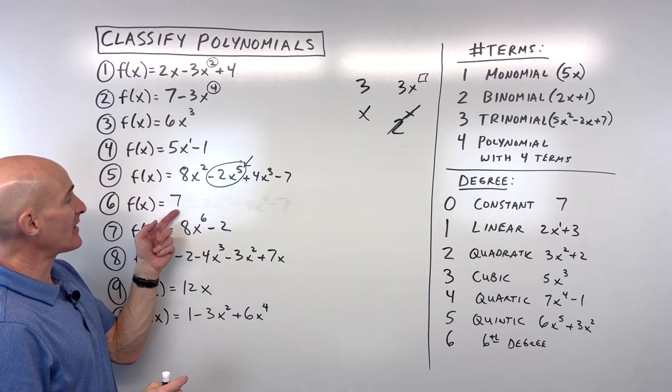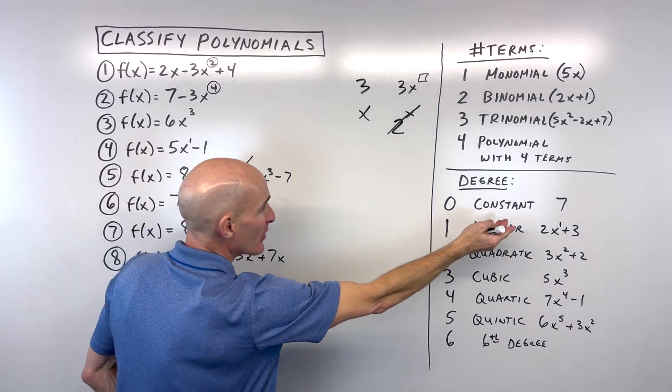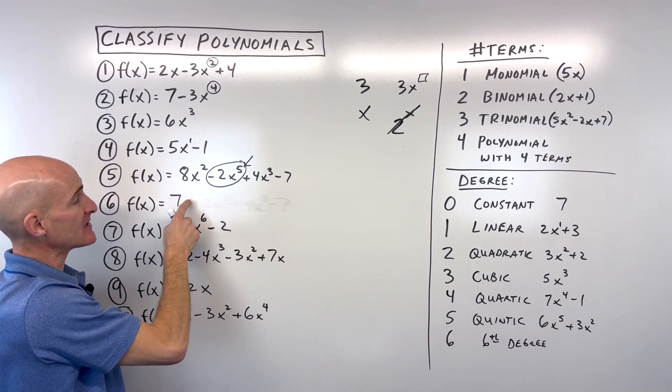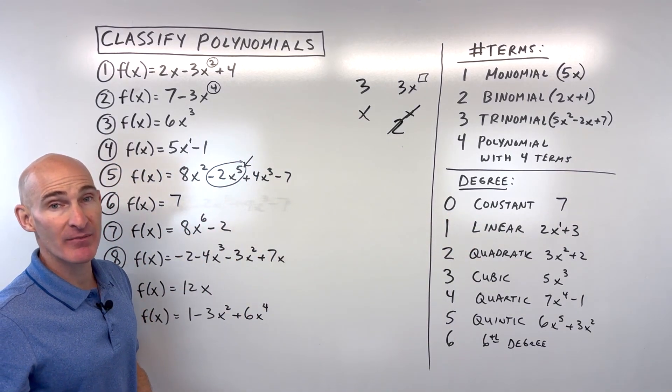Let's go to number six. f(x) = 7. I actually had that one right here. So this is a constant because it's the 0th degree and it's a monomial. So you could say constant monomial.